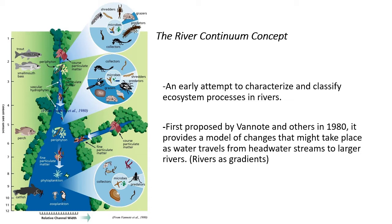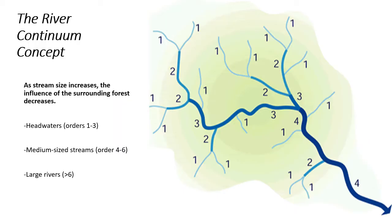The river continuum concept is one of the main models of riverine ecosystem ecology. First proposed by Vanote and others in 1980, it provided a framework that describes how streams systematically change as they get bigger, and how energy flow and the invertebrate community structure changes as well. The river continuum concept is based on the idea that as stream size increases, the influence of the surrounding forest or riparian area decreases.